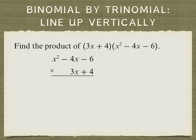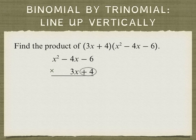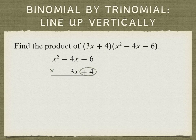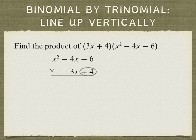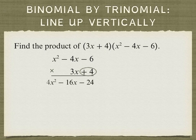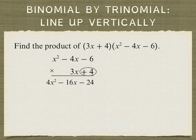So it's related to whole numbers because we're going to take the 4 and multiply that positive 4 times the three terms above it. So 4 times negative 6 is negative 24, 4 times negative 4x is negative 16x, 4 times x squared is 4x squared.